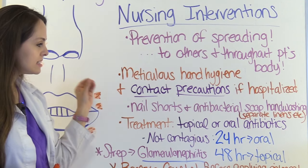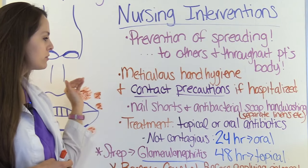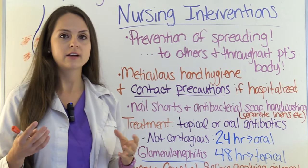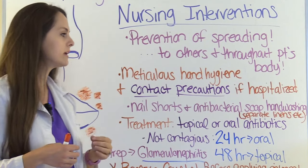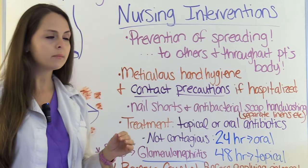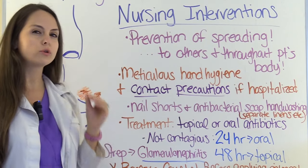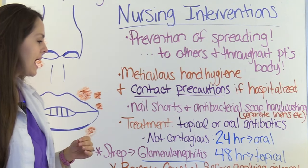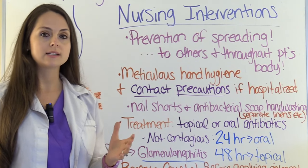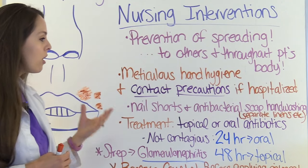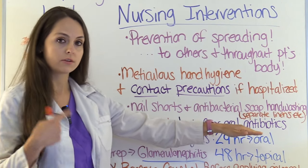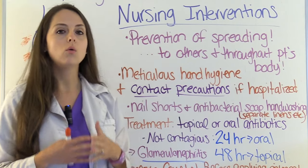The child may have the tendency to want to scratch the area because it itches, so educate parents about keeping the child's nails short and trying to distract them from scratching, because they can actually spread it throughout the body to other areas of skin. Treatment includes either topical antibiotic ointment or oral antibiotics — a really severe case will require oral antibiotics. Without treatment, Impetigo can be contagious for weeks until the lesions heal. With antibiotics, they won't be contagious after 24 hours of starting oral antibiotics or 48 hours if on topical ointment.